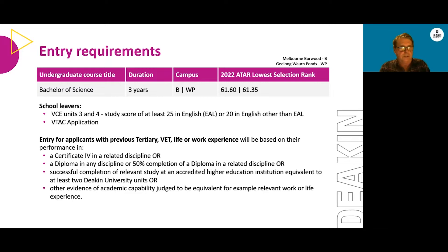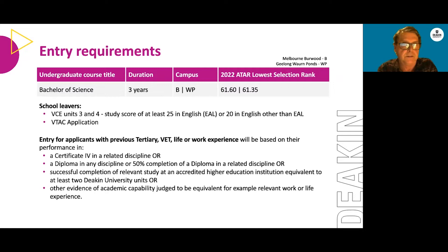For students coming in through the VCE system who are at secondary school this year and applying for Deakin University next year, you'll need to apply through the VTAC system — the Victorian Tertiary Admissions Centre. You can apply for the Bachelor of Science at either the Burwood campus or the Waurn Ponds campus, or both, and you can also apply for double degree programs that involve the Bachelor of Science.